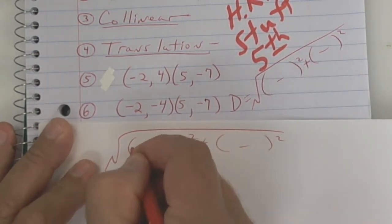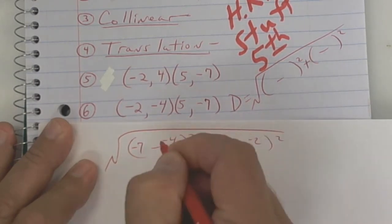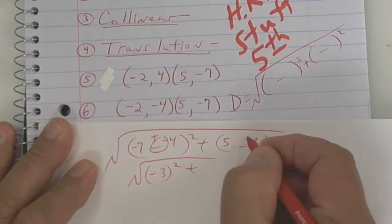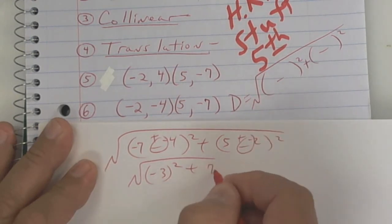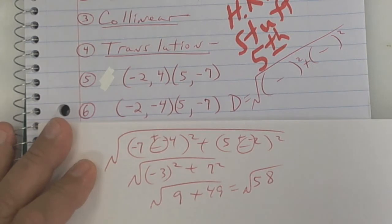So I get a negative 7 and a negative 4. I get a 5 and a negative 2. So this becomes a plus. And that one becomes a plus. So it looks like I get 9 plus 49, which gives me the square root of 58. Did anybody else get the square root of 58? That's what I'm going to go with. So look at your work and see if you have that.